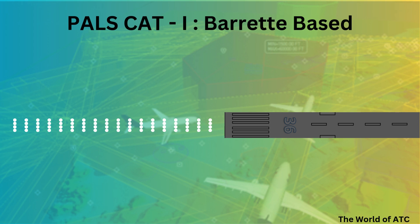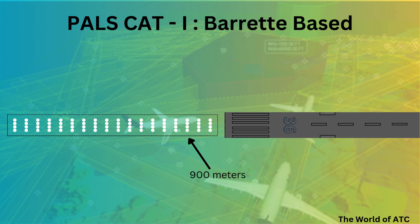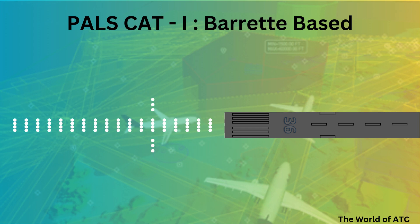Just like the single light source based system, the Barrett based would also have a total length of 900 meters from the runway threshold. However, each single center line light would be converted into a Barrett. There would be only one crossbar at a distance of 300 meters from the runway threshold.